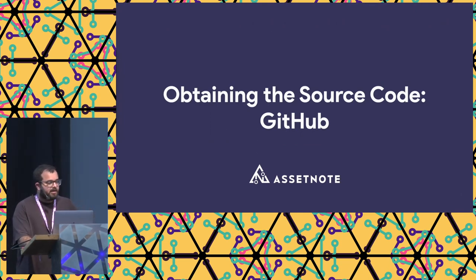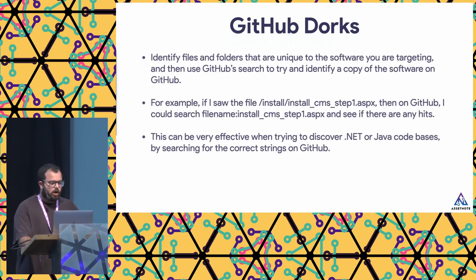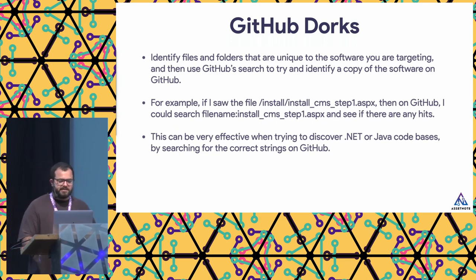Another technique is GitHub. You can use GitHub search to identify whether someone has put up the software on GitHub and obtain a copy. For example, if you're using the enterprise web application and you see 'install CMS step one,' you could search that as a filename and see if it's available on GitHub. This can be really effective for .NET or Java codebases by searching the correct strings.